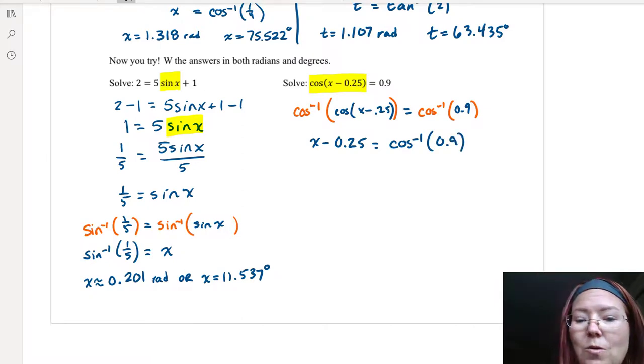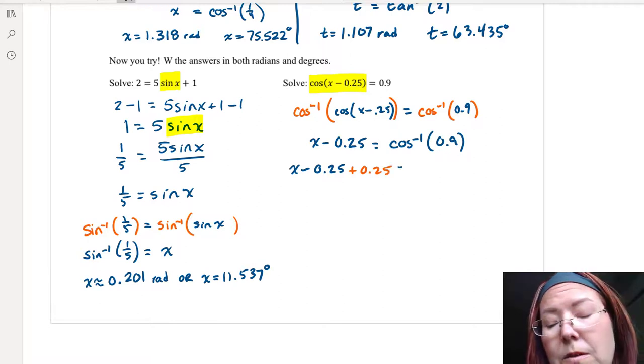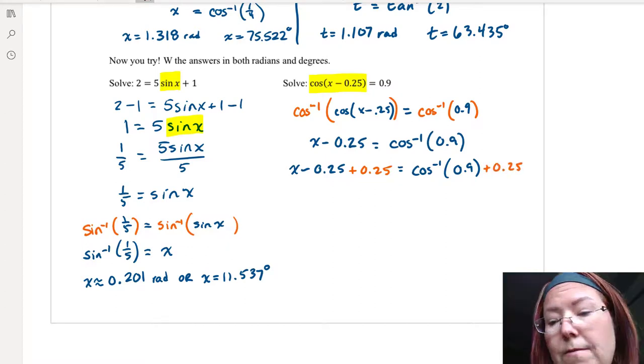And so here, what I need to do is remember that the 0.25 will get added to the other side when I solve for x. So I'm going to add 0.25 to both sides. Simplifying, we get x on the left equals inverse cosine of 0.9 plus 0.25.